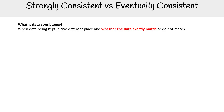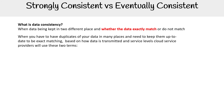Let's talk about data consistency. This is when data is being kept in two different places, and whether the data exactly matches or does not match. So when you have to duplicate data in many places, and you need to keep them up to date to be exactly matching, based on how the data is transmitted and the service levels of your cloud service provider.